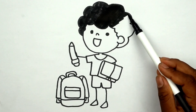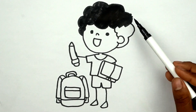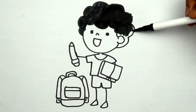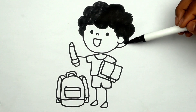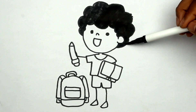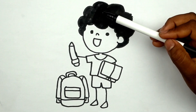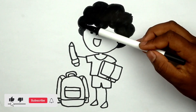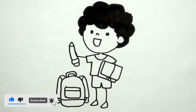A, B, C, D, E, F, G, H, I, J, K, L, M, N, O, P, Q, R, S, T, U, V, W, X, Y, and Z. Now I know my ABCs, next time won't you sing with me?